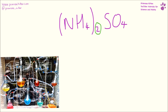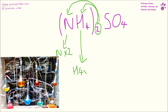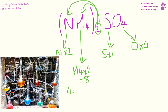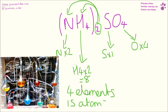Here we have two of everything inside the brackets, so we have nitrogen and we have two of those. We have hydrogen and we have four times two giving us eight hydrogens. We have sulfur and we have one of those, and we have oxygen and we have four of those. So we have four elements and two plus eight plus one plus four giving us fifteen atoms.